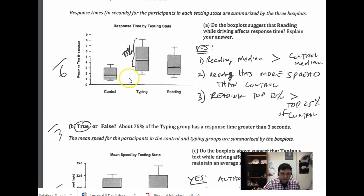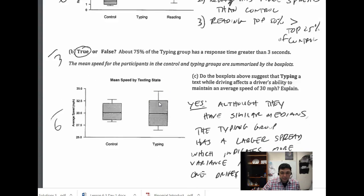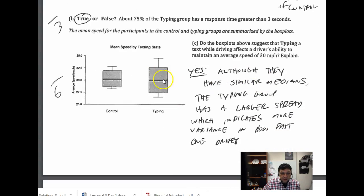And then the next piece: Does typing influence ability to maintain average speed? That's kind of a trick question. The medians are approximately the same, but you can see this widespread means there's a lot of variance. Typing does influence people - some people slow down, more people slow down, and more people speed up. So you can see there is variance, there's a larger spread, so it does affect it.